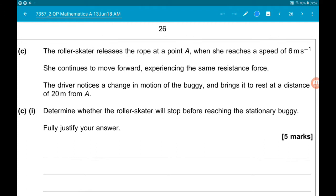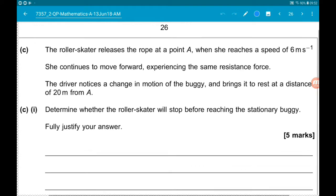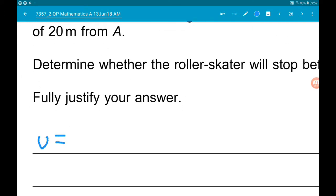We want to determine whether the roller skater will stop before reaching the stationary buggy. Fully justify your answer. Okay, so let's work out then what we know about the roller skater. So she releases the rope when her speed is six meters per second, so her initial speed is six. Now we want her to stop, so her final velocity V is equal to zero.